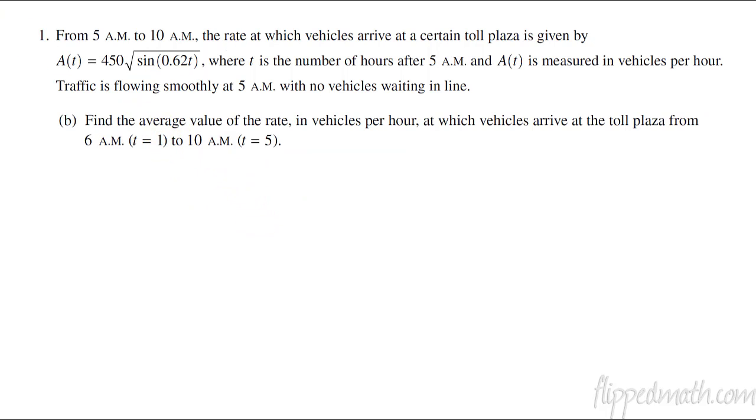Part B, now we're going to look at the average value. We're looking for the average value of the rate. This is already the rate, so what we're looking for is the average value of A(t) on a specific interval. How do we do that? This is where we do the integral from 1 to 5 of A(t) with respect to t, except for because we're doing average value, this is where you have the 1 over b minus a, which is 1 fourth, or 5 minus 1.